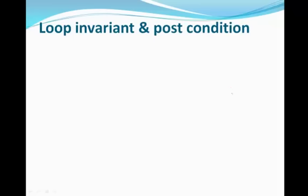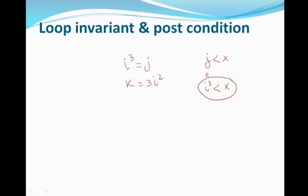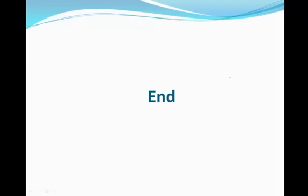So how do we get the postcondition from the loop invariant? We have two loop invariants: i cubed equals j and k equals 3i squared. The loop condition was while j is less than x. Since j equals i cubed, we are testing to find the largest i whose cube is less than x. For example, when x is 4, i equals 1. And if x were something like 9, we might get that 2 cubed, which is 8, is less than 9. We'll leave the rest of that discussion for class and end this video lecture now.